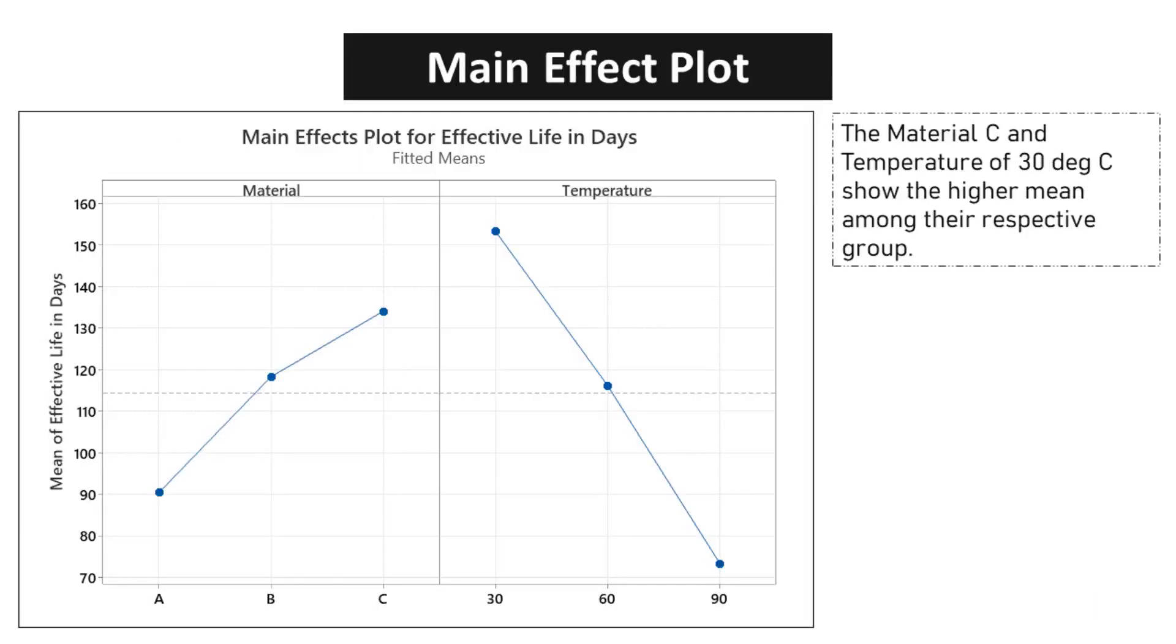From the main effect plot, material C and temperature of 30 degrees Celsius show the higher mean among their respective group.